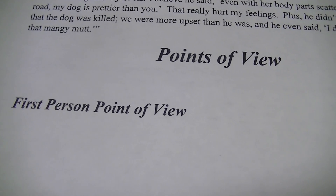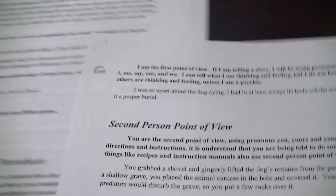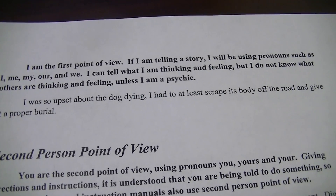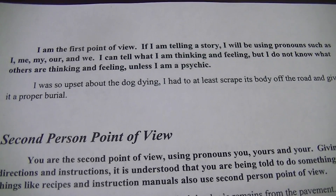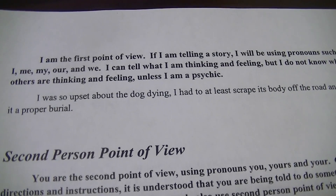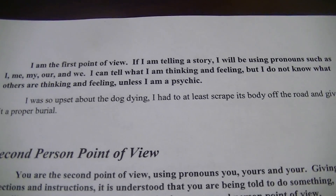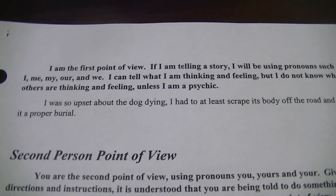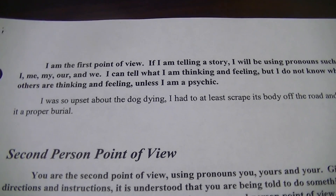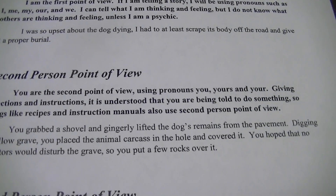Let's talk about points of view. First person point of view: I am the first person point of view. If I'm telling a story, I'm going to use pronouns like I, me, my, our, we — and I can tell you what I'm thinking and feeling, but I don't know what other people are thinking and feeling unless I'm a psychic. Example: "I was so upset about the dog dying. I had to at least scrape his body off the road and give it a proper burial." That's first person point of view because we're using the word I.